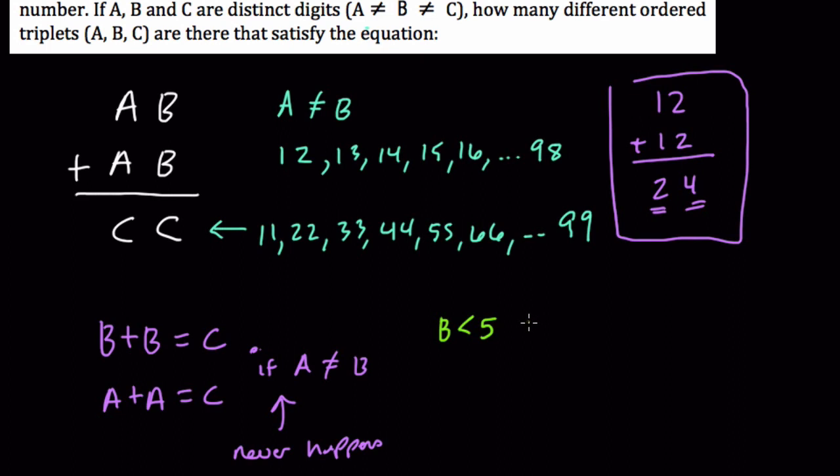So 1 or 2 or 3 or 4, or 0. 0, 1, 2, 3, 4. If we add B plus B, we're going to get a number that's less than 10. In other words, nothing's going to carry over. Well,